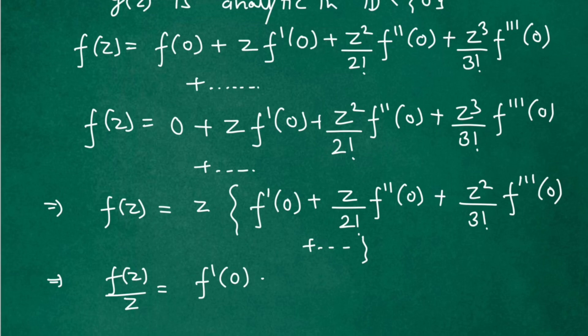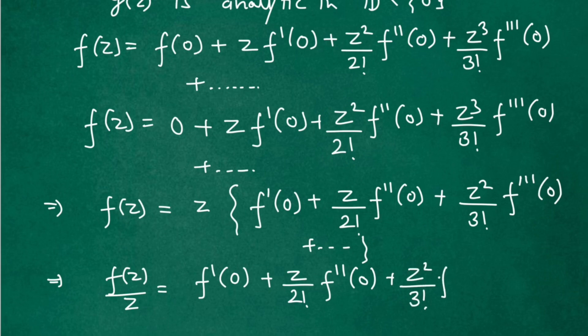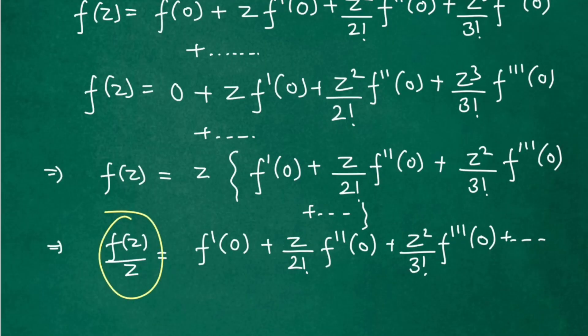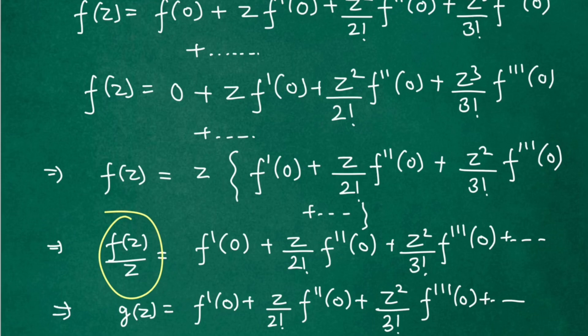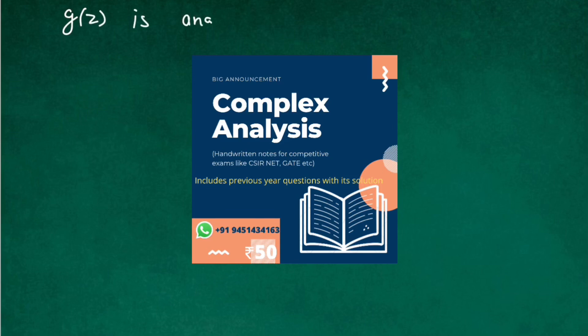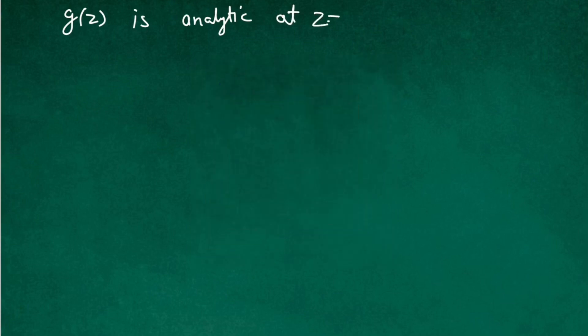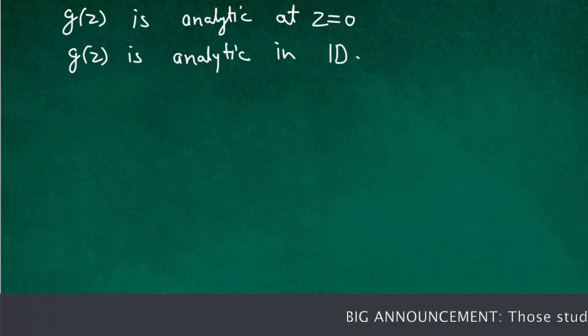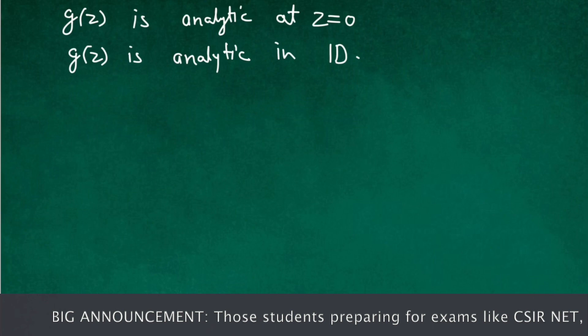So we have f(z)/z = f'(0) + (z/2!)·f''(0) + (z²/3!)·f'''(0) + ... , and this is nothing but g(z). On the right-hand side we have a convergent series, so we can conclude that g(z) is also analytic at z = 0. Therefore g(z) is analytic at z = 0, which means g(z) is analytic in the entire unit disk D.